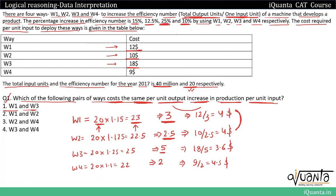So option 2 — W1 and W2 — would be the correct answer. We took the efficiency number of 20, applied all the ways to find new efficiency numbers, then found the increase in output units. For each way, we divided the cost by the output increase to get cost per unit output, and found W1 and W2 both equal $4.